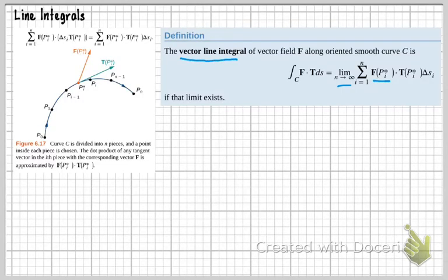The vector line integral of vector field f along oriented smooth curve C is the integral of f dot t ds, and it's the limit of this sum.